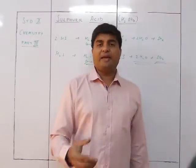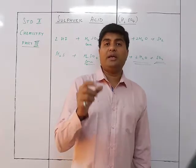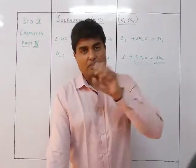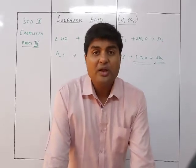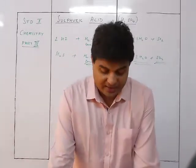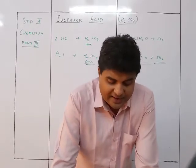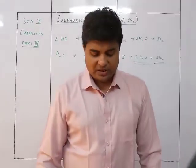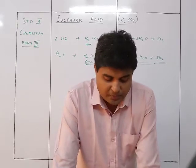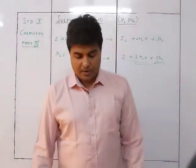Concentrated H₂SO₄ removes elements of water (H and O in 2:1 ratio) from carbohydrates and organic compounds. It is not merely a drying agent — a drying agent removes surface moisture causing only a physical change, whereas a dehydrating agent causes a chemical change and alters the composition of the compound. H₂SO₄ also removes water of crystallization from hydrated salts.